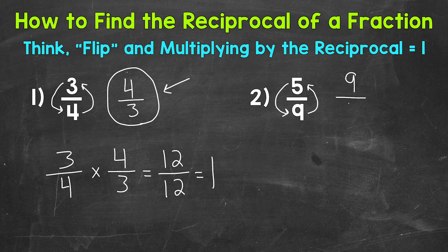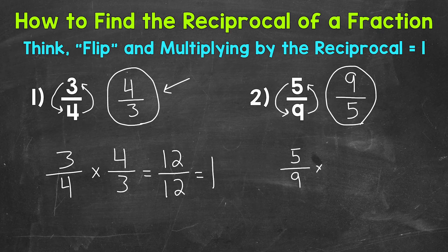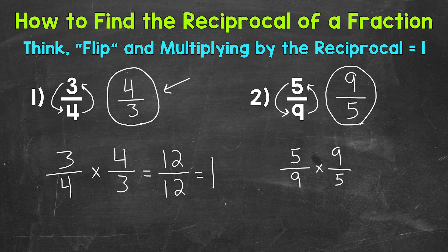Let's multiply our fraction, 5 ninths, by the reciprocal, 9 fifths, to show that we get 1 when we multiply by that reciprocal.